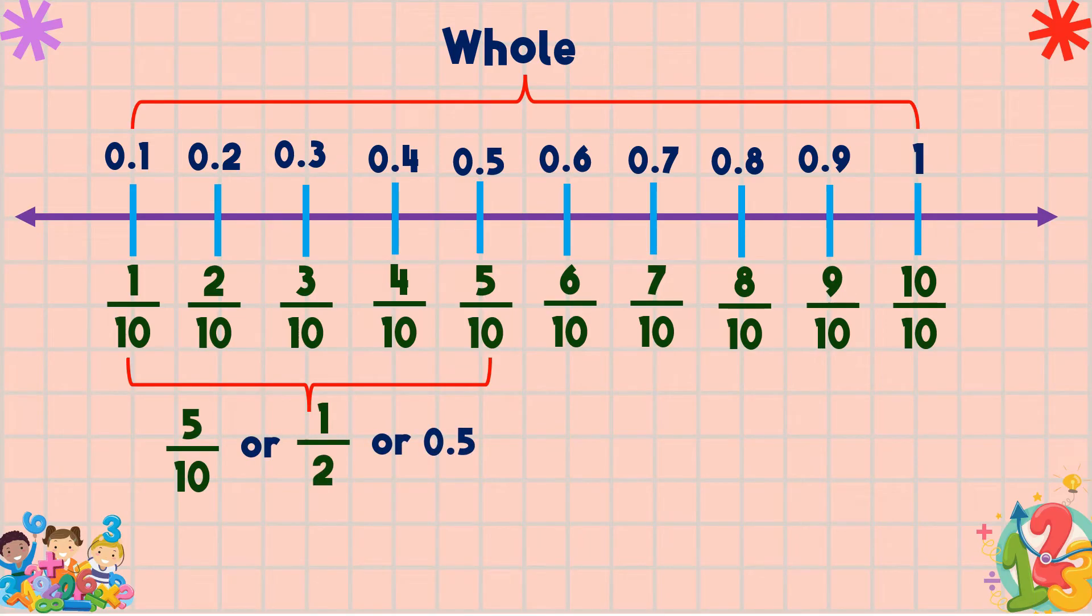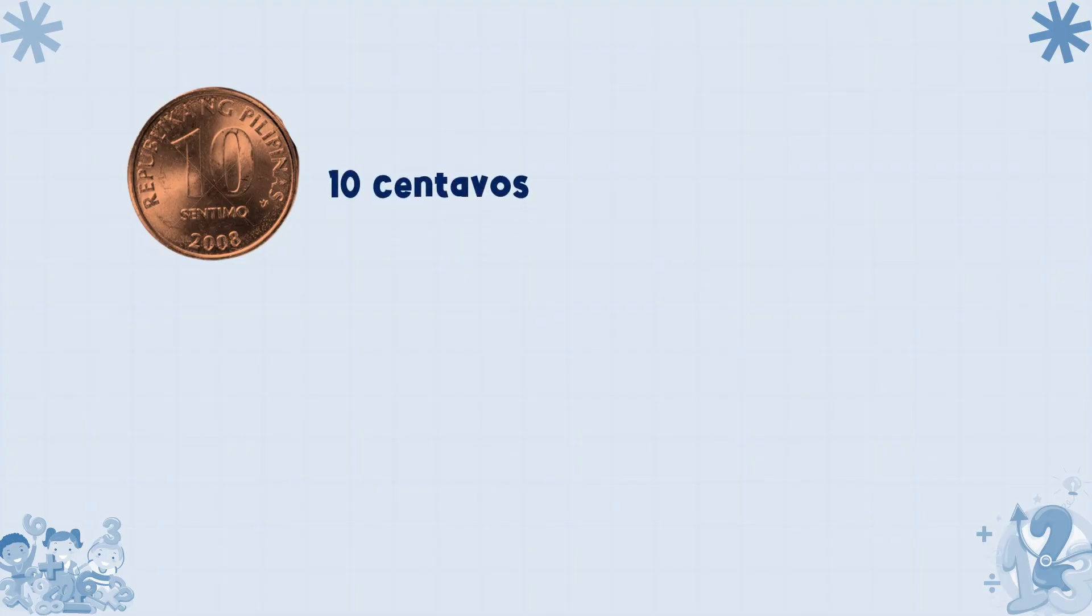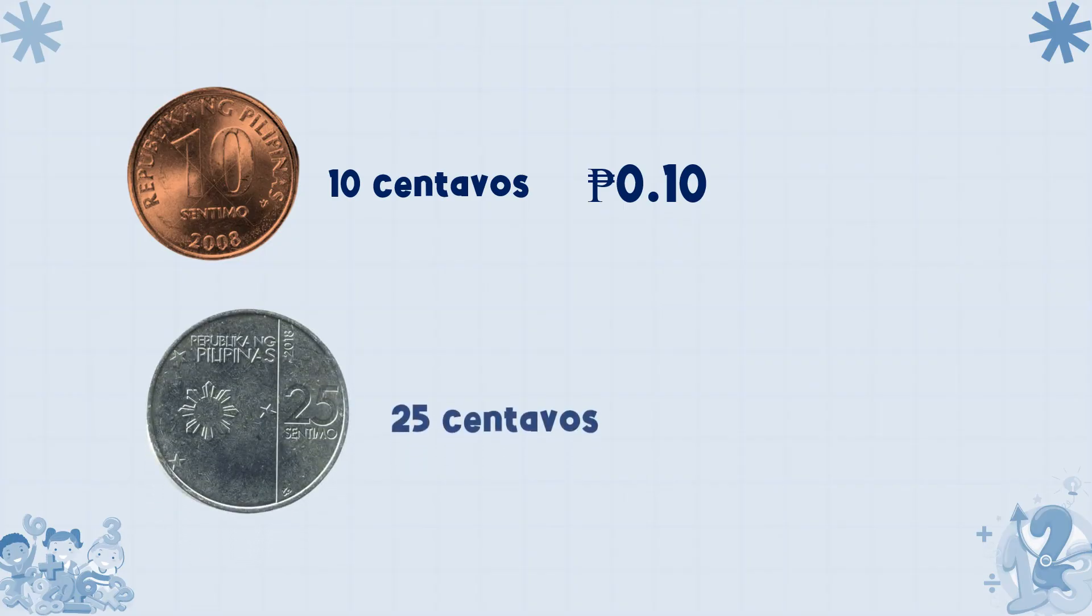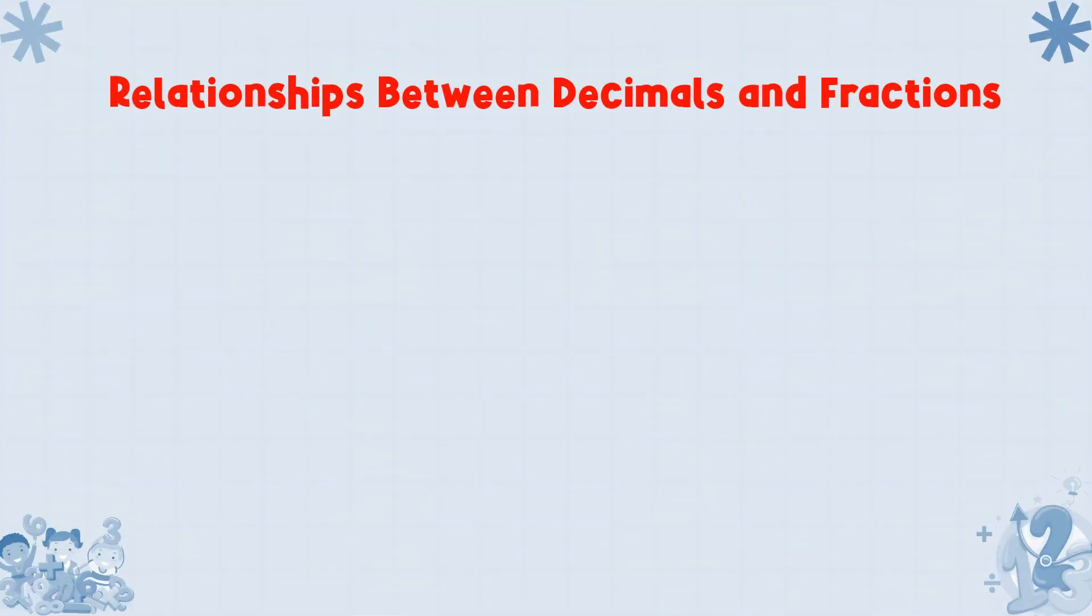How are decimals related to money? In money, we have centavos. The decimal represents the centavos. For example, 10 centavos—in symbol, we write 0.10. This is 25 centavos—in symbol, 0.25. These are the relationships between decimals and fractions.